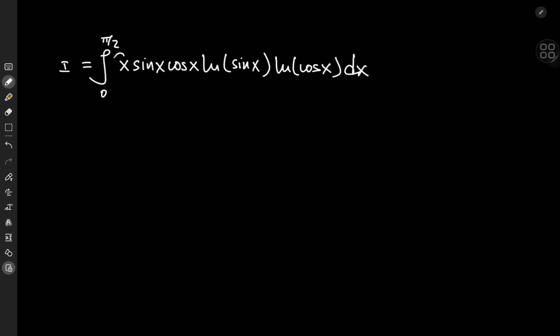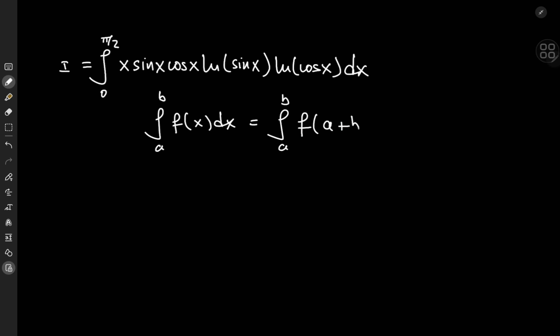Now how do we approach it? It's the x term that's a bit pesky, so we'd like to get rid of it by introducing a phase shift. We know that the integral from a to b of f(x) dx equals the integral from a to b of f(a + b - x) dx. This can be proved using a simple u-substitution. What this property means is that integration from left to right is the same as integration from right to left — adding up those little chunks of area under the curve gives you the same result either way.